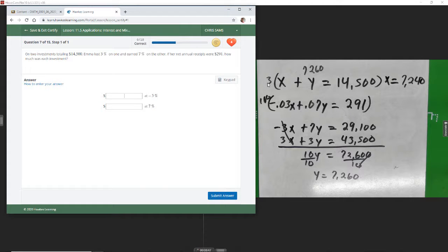Okay, so the loss was the x, the lower amount, $7,240, and then $7,260.